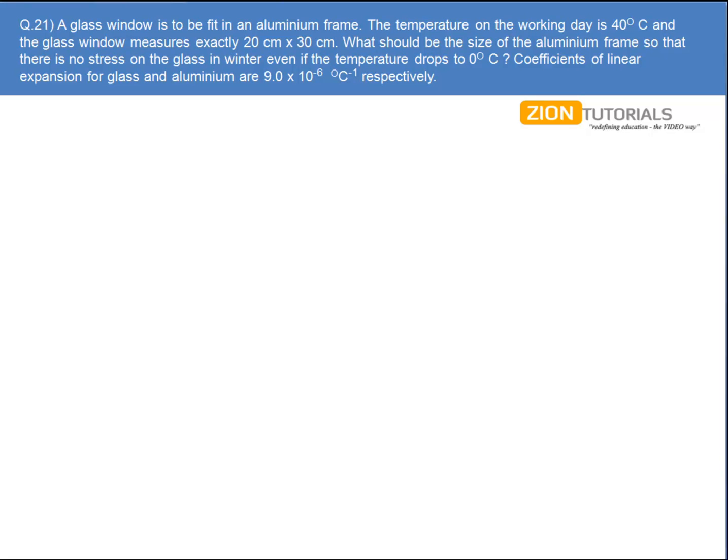A glass window is to be fit in an aluminium frame. The temperature of the working day is 40 degrees and the dimensions of the glass window are exactly 20 x 30 cm on this very day, that is when the temperature is 40 degrees. What should be the size of the aluminium frame so that there is no stress on the glass in winter, even if the temperature drops to 0 degrees?